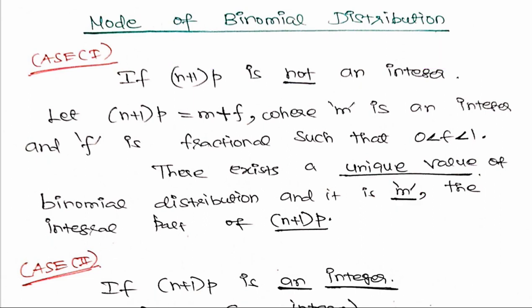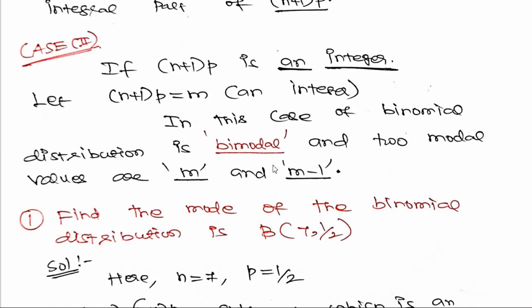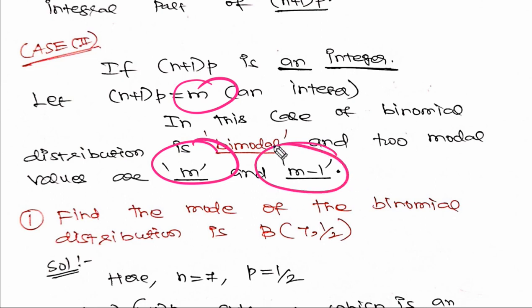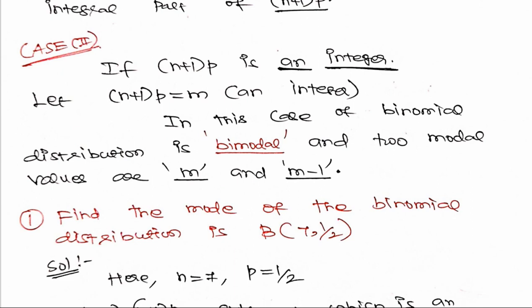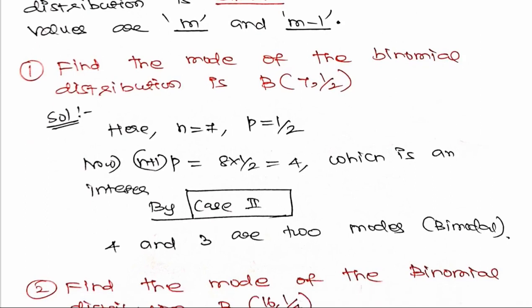If n+1 times p is an integer, then both that integer and the preceding value are modes. For example, suppose n+1 times p equals 3, then both 3 and 2 would be modal values. So the mode of the binomial distribution follows these two cases. We have now completed the concept and will look at an example.